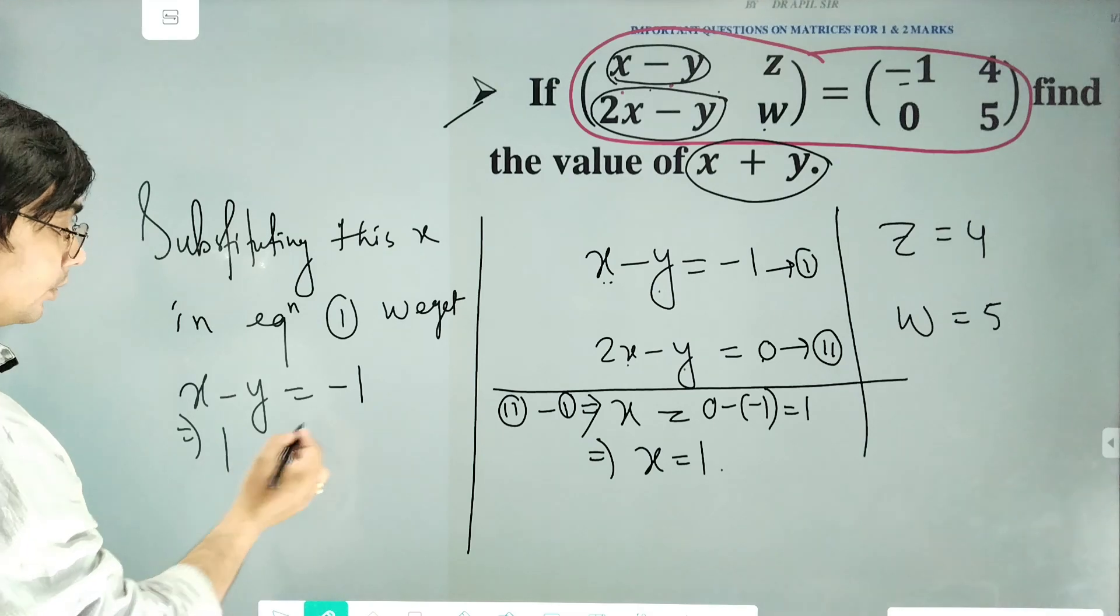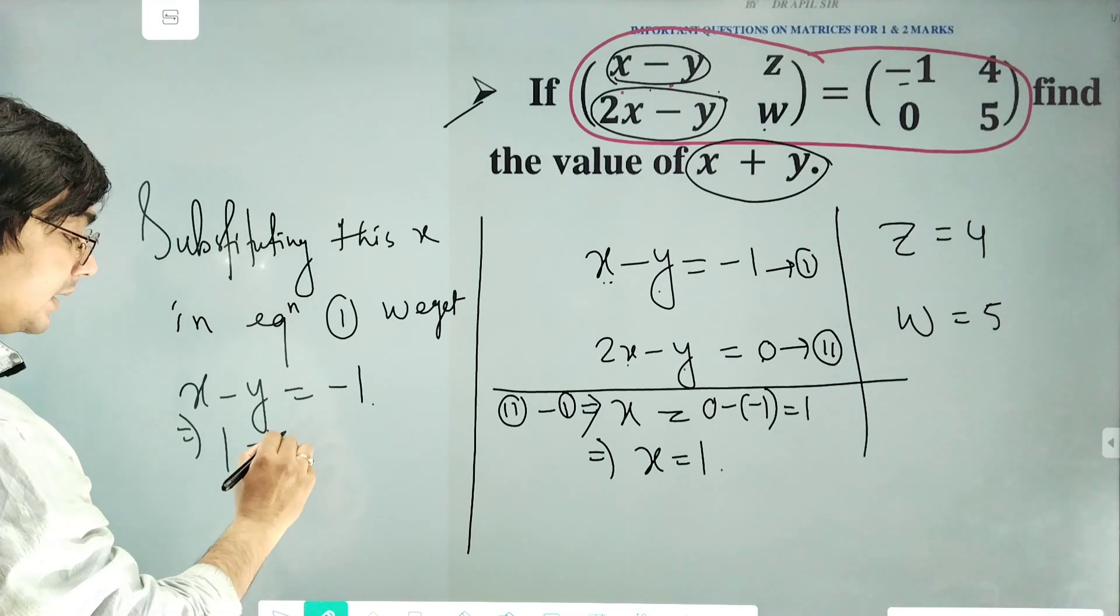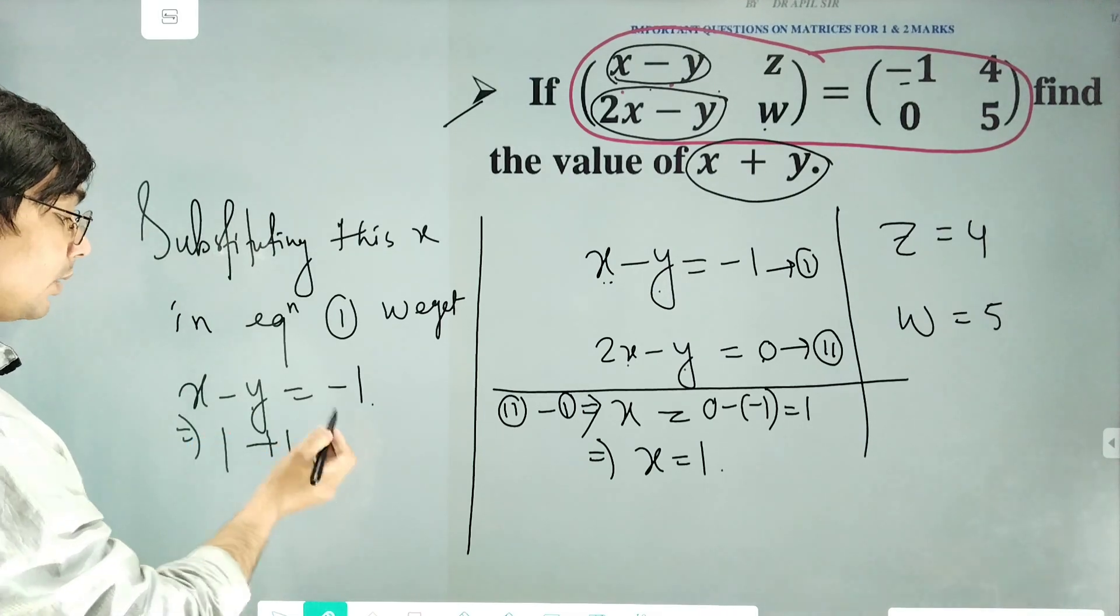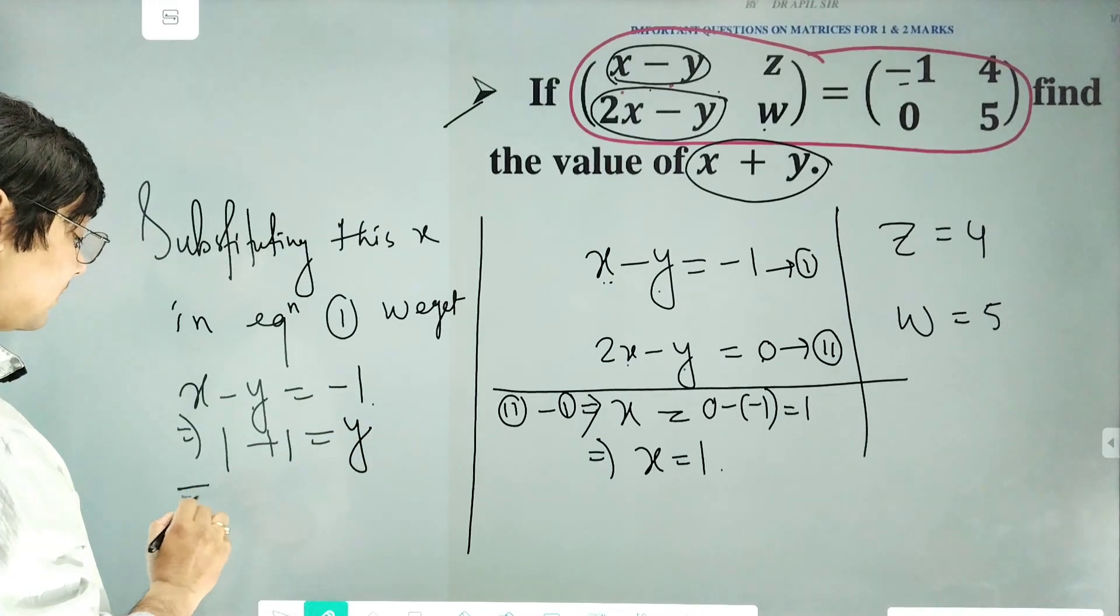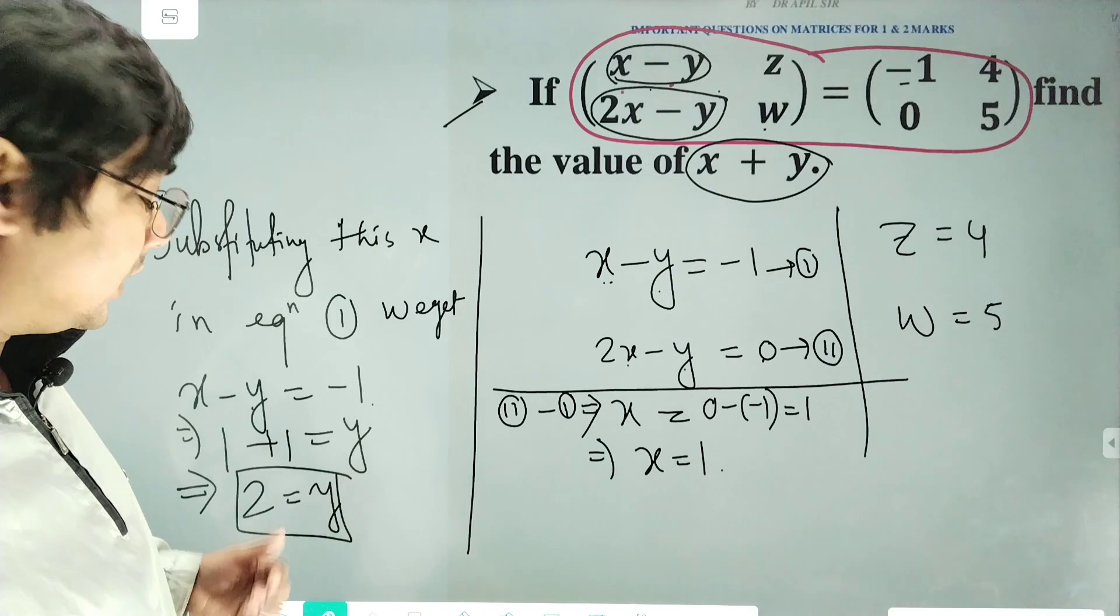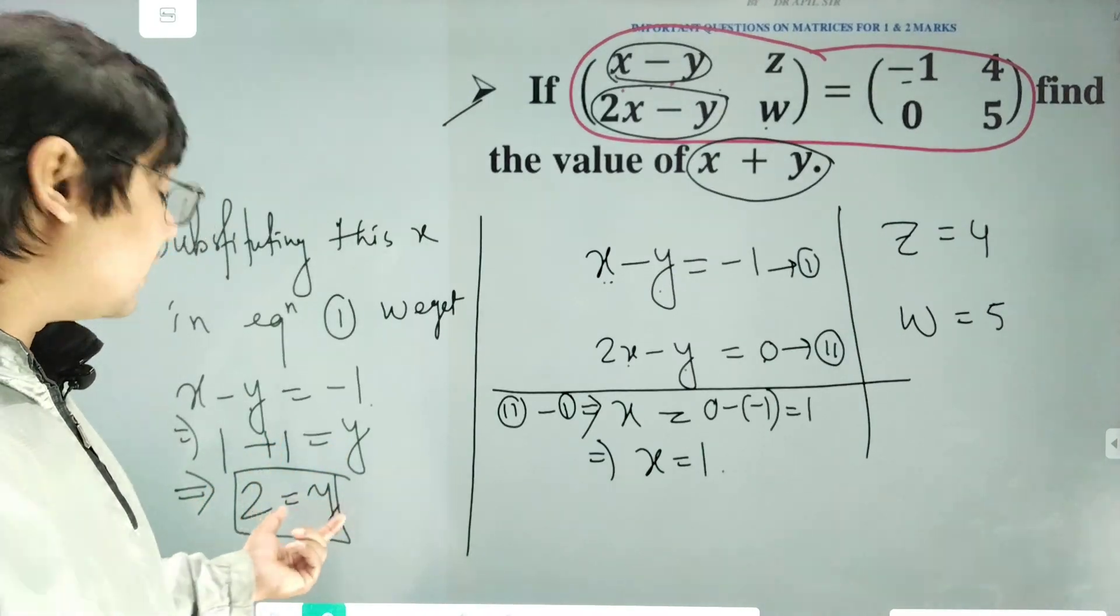This x is equal to 1, so 1 minus y is equal to minus 1. Therefore, 1 plus 1 is equal to y, so from here y will be 2.